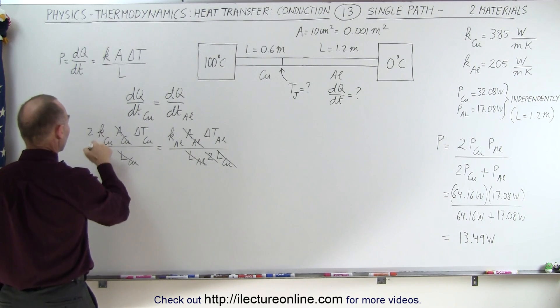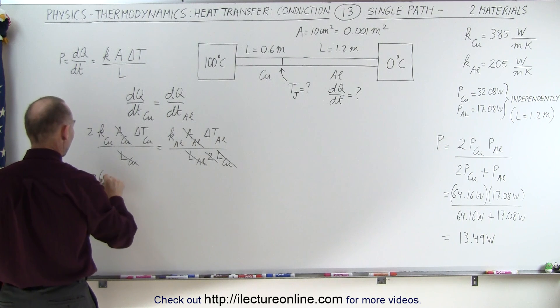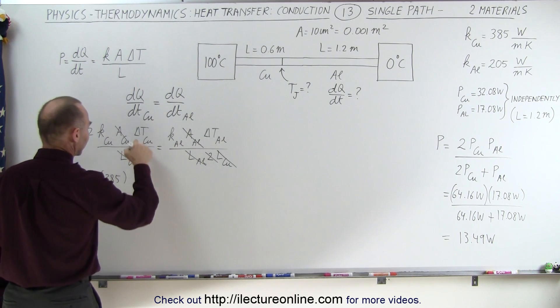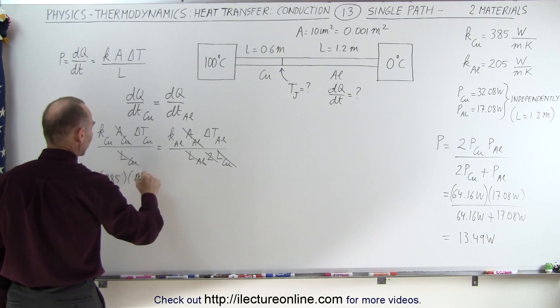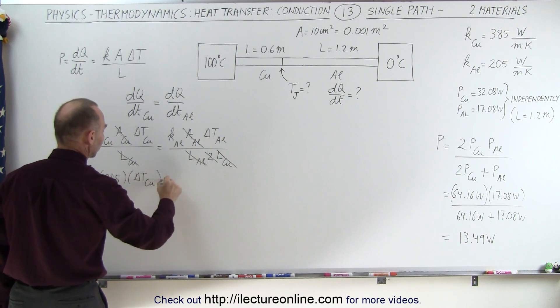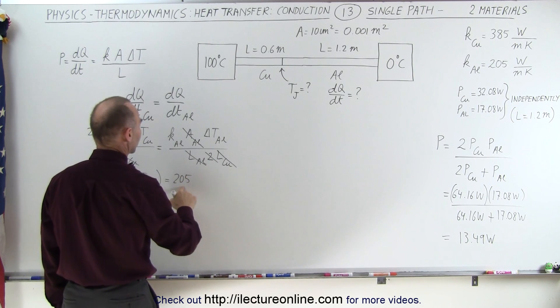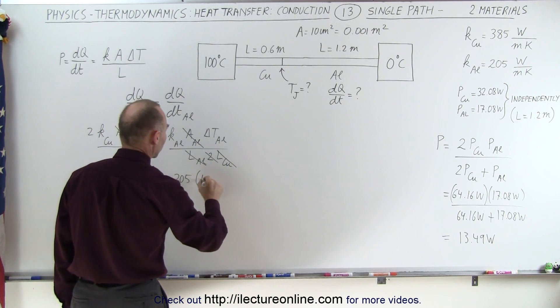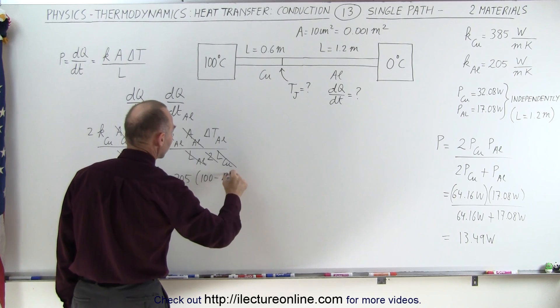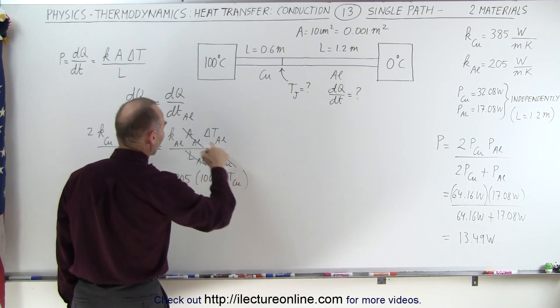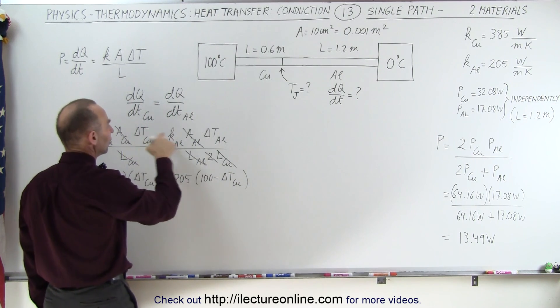And now we have something that was very similar to what we had before. So let's write out what we have: twice the conductivity constant, so two times 385 times the difference in the temperature for the copper section is equal to 205, which is the heat conductivity constant for aluminum times 100 minus the delta T for copper.